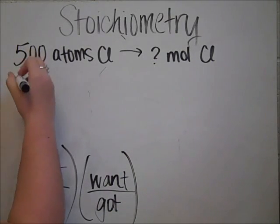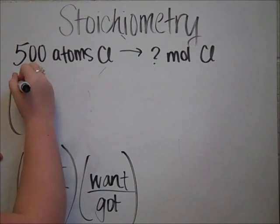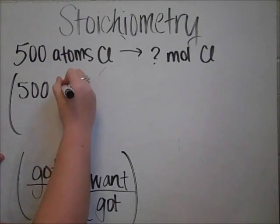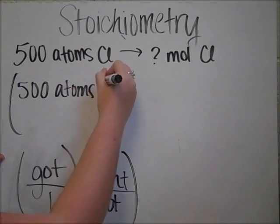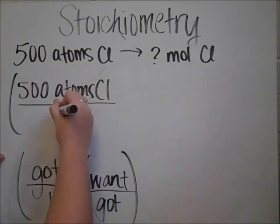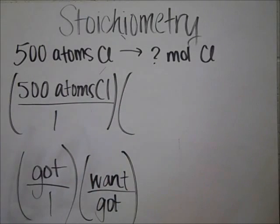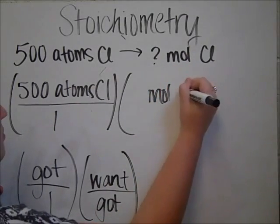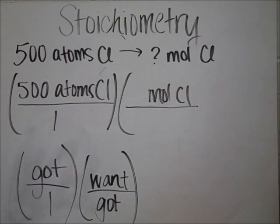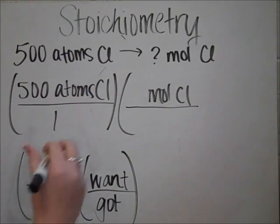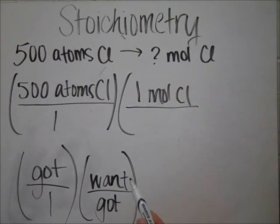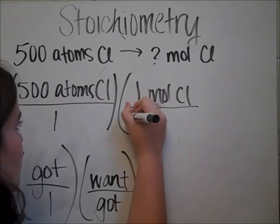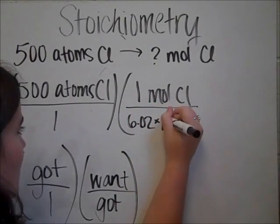So the first thing we're going to do is put 500 atoms of chlorine over 1. And then you have to put what you want over what you got. So in the end, we want moles of chlorine. And so to make up 1 mole of chlorine, we would use this thing called Avogadro's number, and it's 6.02 times 10 to the 23rd.